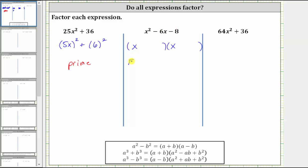So we want to see if we can find factors of negative eight, the constant term, that add to the coefficient of x, which is negative six. Well, negative two times positive four is negative eight, but negative two plus four is equal to positive two, not negative six.